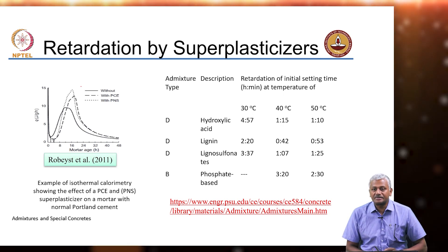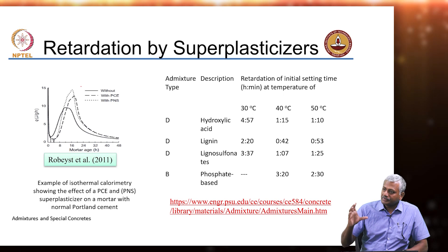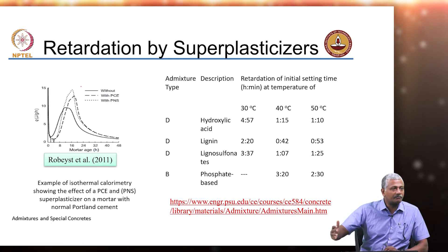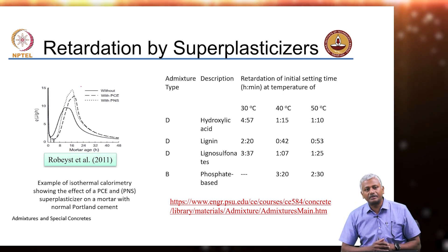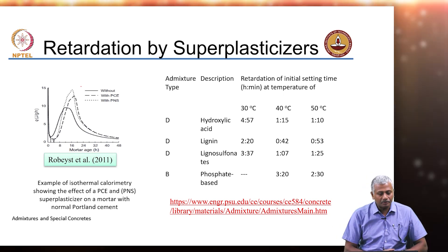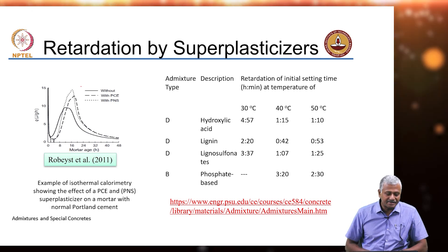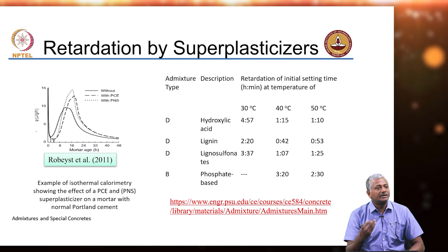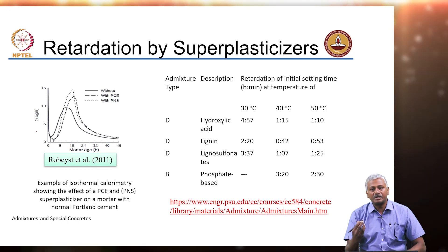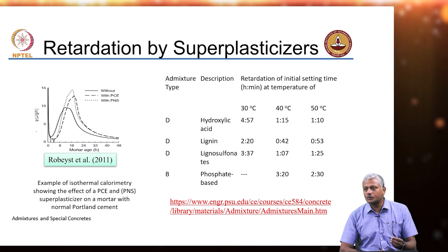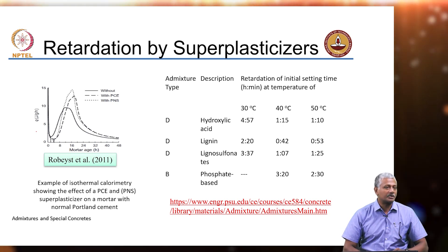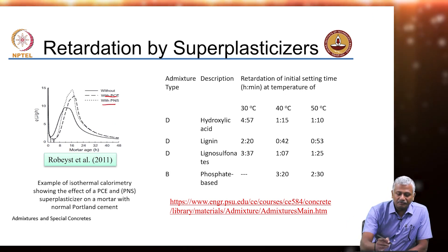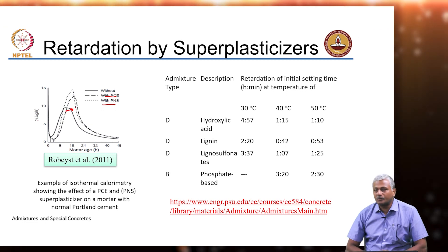Superplasticizers envelop cement particles and prevent hydration. Extension of this effect over a longer period — for example by polycarboxylates — will further retard hydration. So superplasticizers can also impact retardation of cement hydration. The heat curve study is a good tool to determine relative rates of reactivity or kinetics of a reaction, and it is used extensively to understand the impact of mineral admixtures like fly ash, slag, or calcined clay. With different forms of superplasticizers in cement mortar, there is a minor shift in the time at which the heat peak occurs.